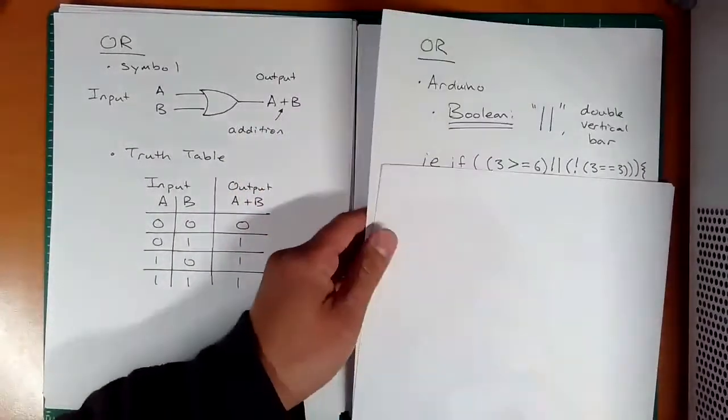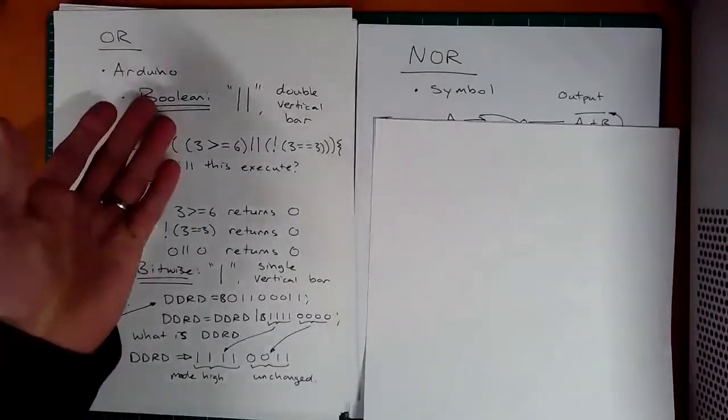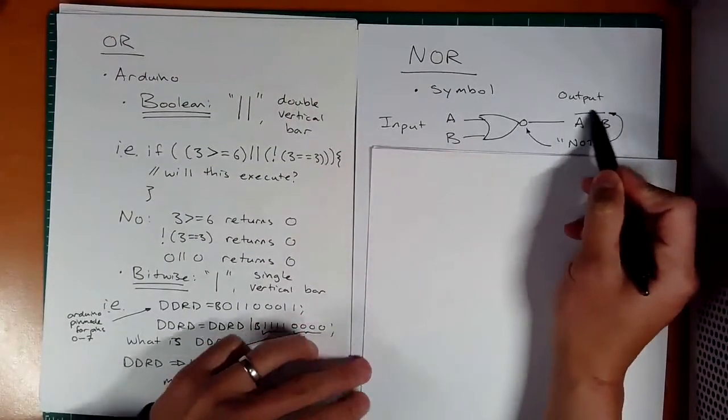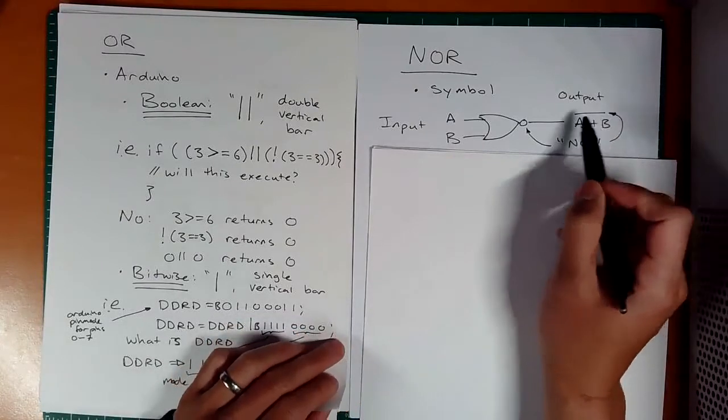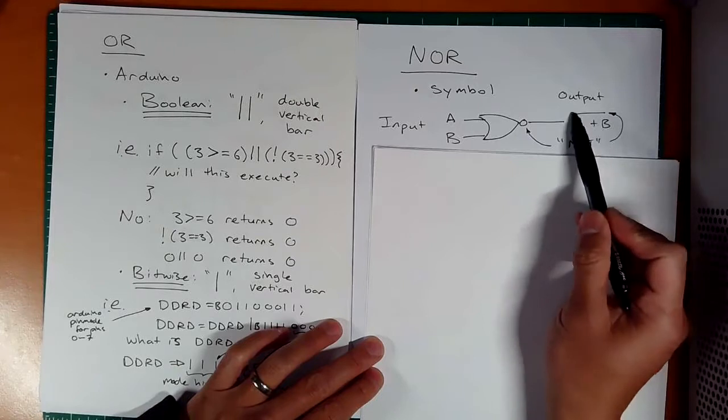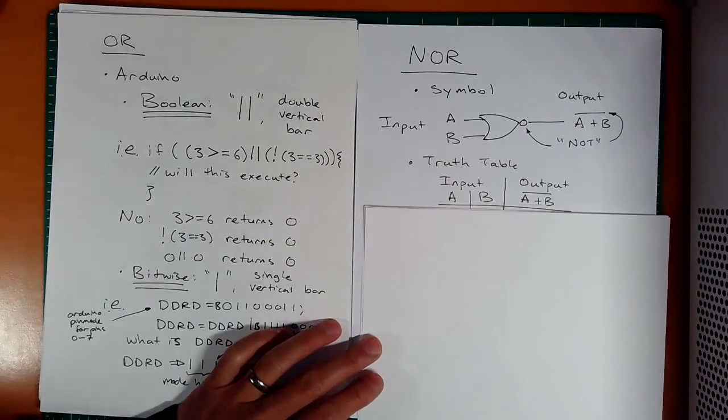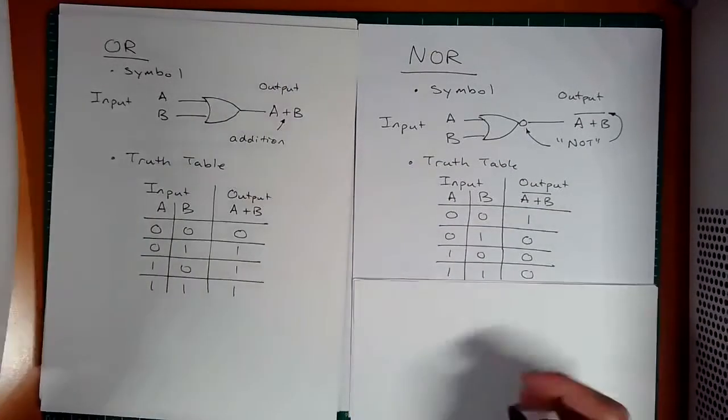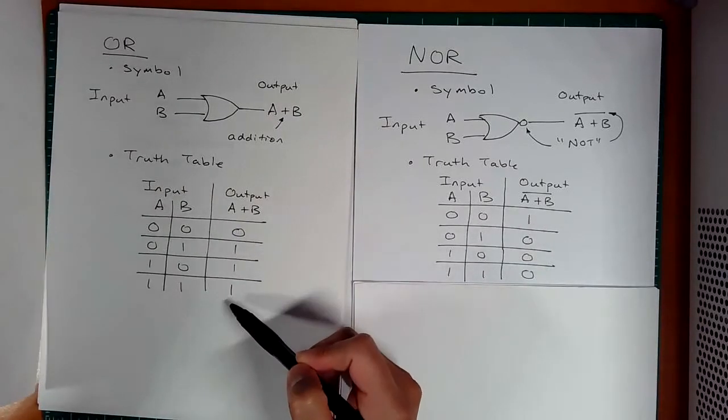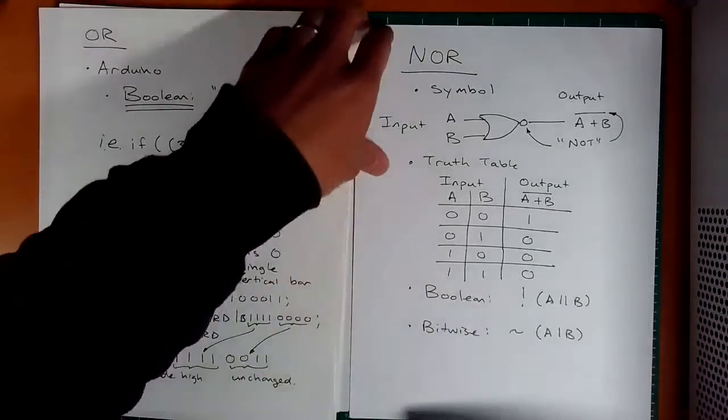Let's look at the NOR. If you know the OR, the NOR is pretty easy—you just add a little bubble, or put a bar over the top. We have A OR B and then NOT. So this is a NOR. The truth table is basically just the inverse of the OR—a 1, 0, 0, 0 instead of a 0, 1, 1, 1.